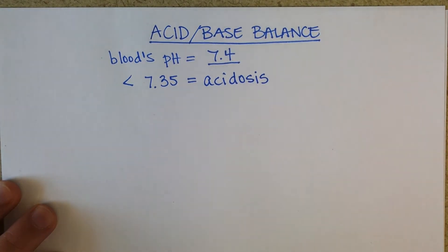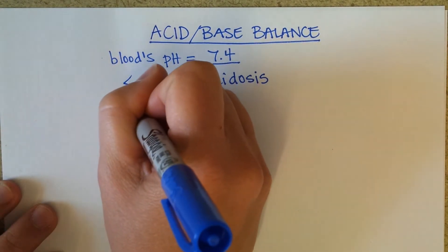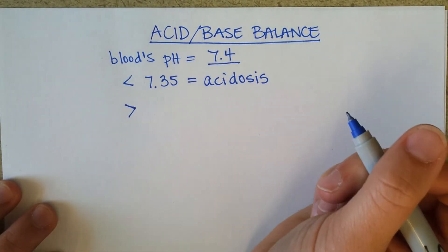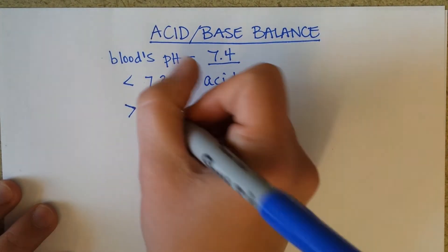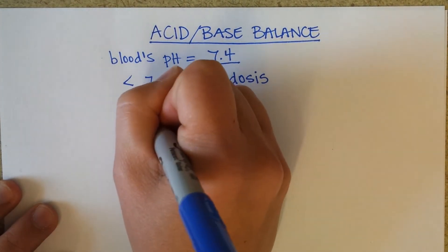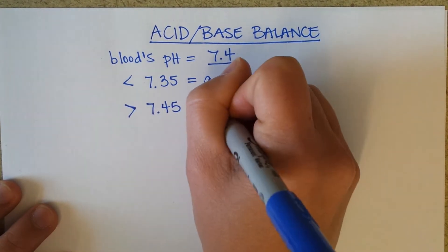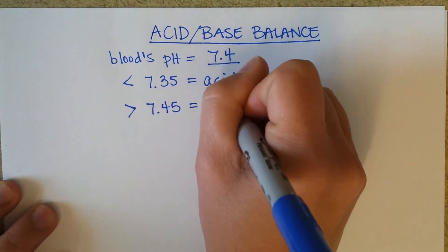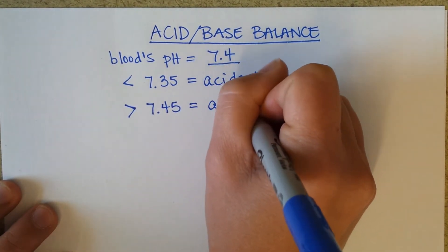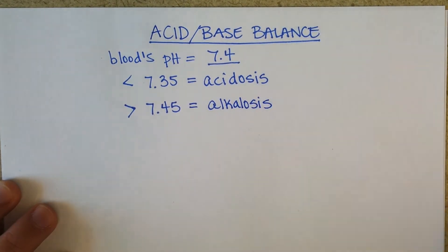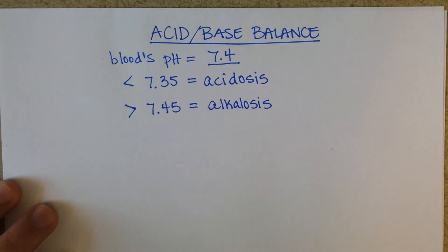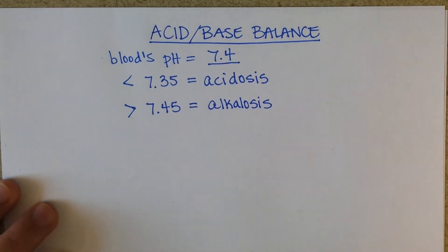If the blood becomes too acidic, proteins begin to stop functioning, and that can result in death. If it gets above 7.45, we call that alkalosis, and the blood is too alkaline.